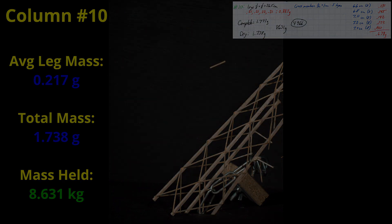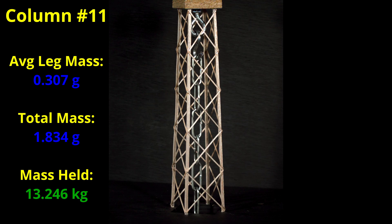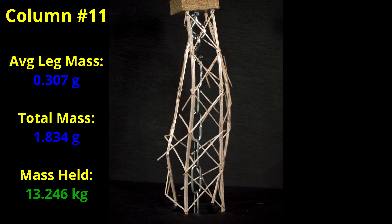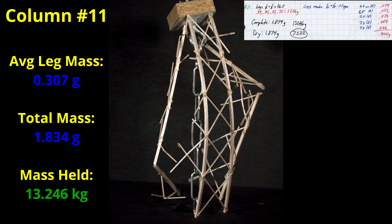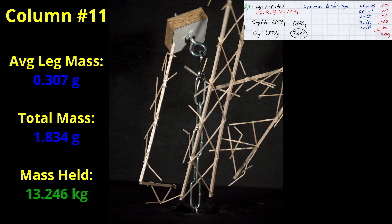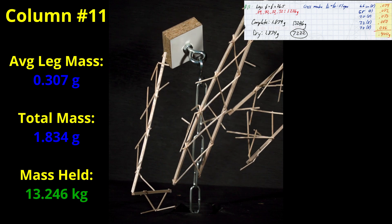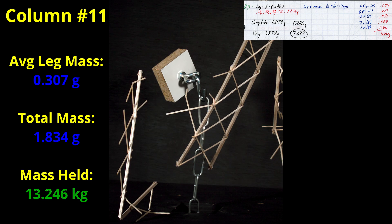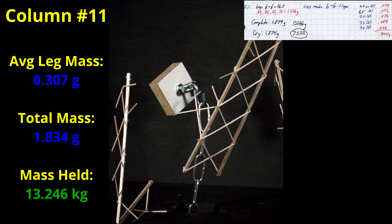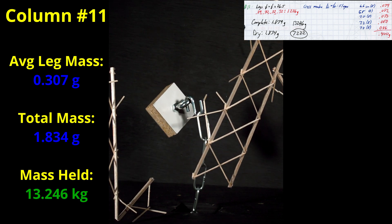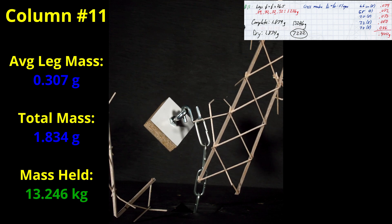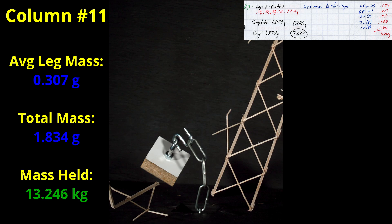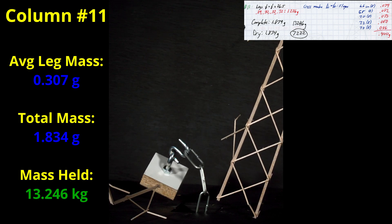For build number 11, I decided to try much stronger legs with an average mass of 0.307 grams, but used fairly light density 1/20th by 1/20th material for the cross members with a total mass of 0.400 grams. This resulted in a column that weighed 1.834 grams and held 13.246 kilograms, a decent result with an efficiency of 7222, but it was not good enough for use for a bonus tower. Again, the high speed shows a leg failure.